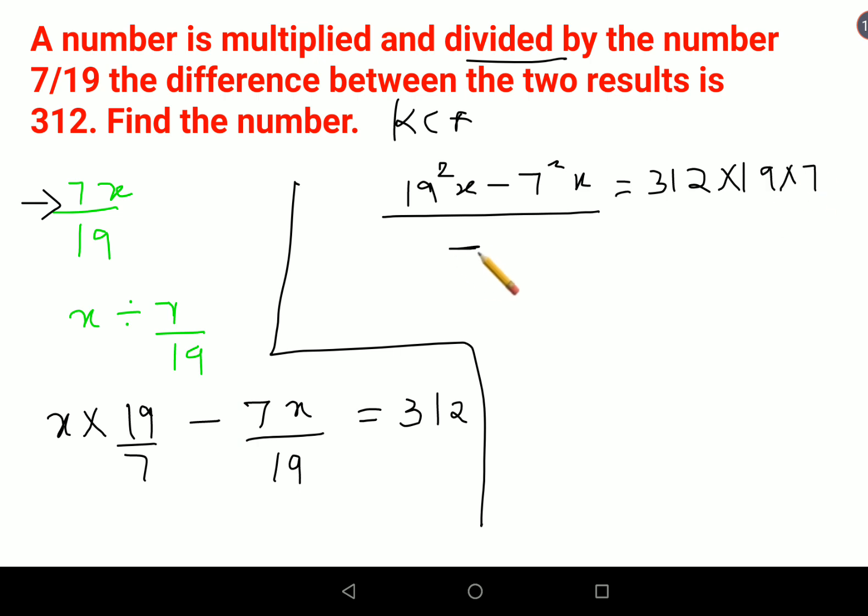Taking the denominator to the other side, 19²x minus 7²x gives us 312x equals 312 times 19 times 7.